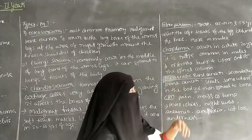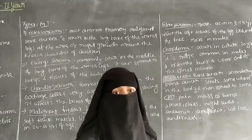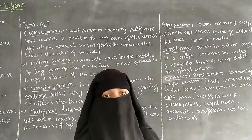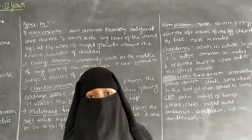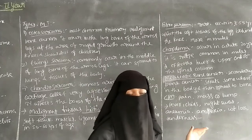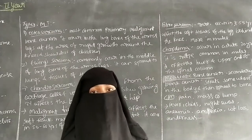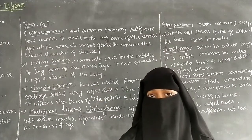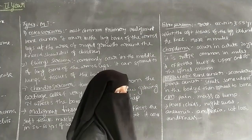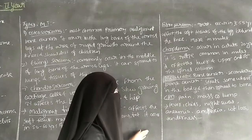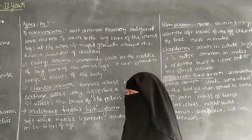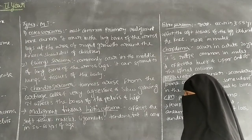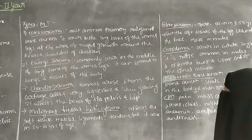The next type is chordoma. It occurs in adults around 30 years of age, is more common in males than females, and is a very rare condition. It mostly affects the lower and upper ends of the spinal cord. The malignant bone tumors include osteosarcoma, Ewing sarcoma, chondrosarcoma, malignant fibrous histiocytoma, fibrosarcoma, and chordoma.